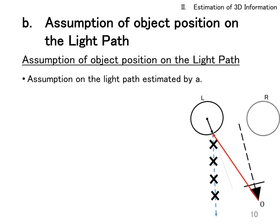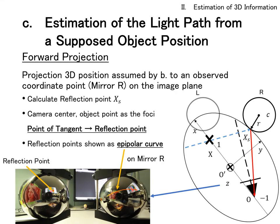Next, we assume that there are multiple object positions on the obtained optical path. For each of the assumed object positions, we estimate the reflection point in the opposite mirror, which is the observed coordinate point in the image taken by the other mirror image.